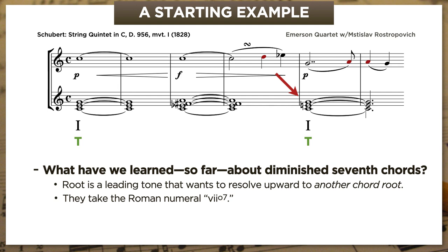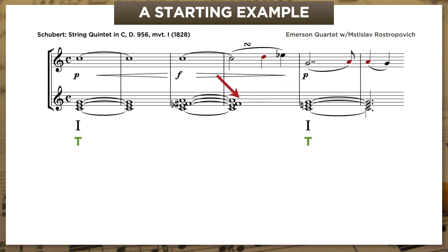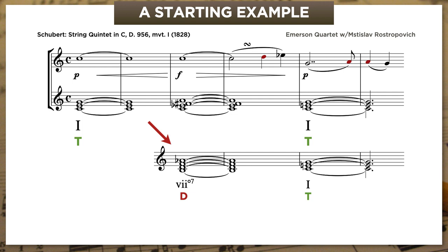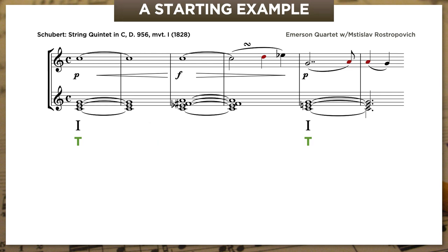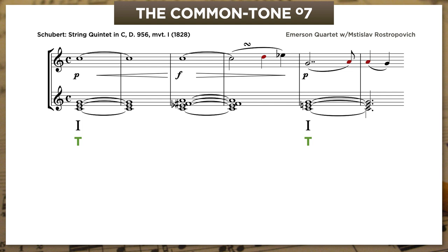So we can't call it VII⁰⁷ of V. But neither is it the VII⁰⁷ chord that normally resolves to C — that chord is built on the leading tone of C, so B, D, F, and A flat. Of course, the title of the video tells us this is called a common-tone diminished seventh chord. It's spelled like a diminished seventh and sounds like one, but it resolves in a very different way, and it's named after the common tone it shares with the chord it resolves to.